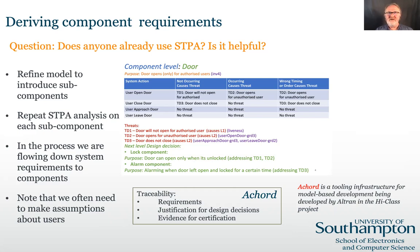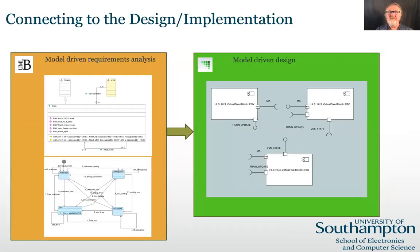One of our partners in High Class, Ultran, are developing a tool infrastructure for modelling-based development, which we will use to provide traceability. At this point, through behaviour-driven scenarios or analysis-driven STPA, or a combination of both, we've refined our models to the point where we have identified all of the components that will make up our system. And in the process, we've allocated requirements to them.